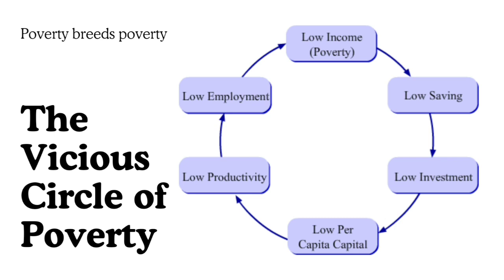From the demand side, if people don't have much income they will cut short on consumption and only buy the most necessary things — so low consumption means low demand for goods and services, which means less incentive for investment and production. Nobody is buying, so nobody wants to produce either. This is poverty breeding poverty. Underdeveloped countries will have to break this circle of poverty with the help of entrepreneurship and labor force — only then can they rise above poverty.